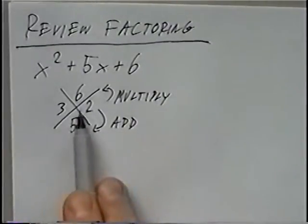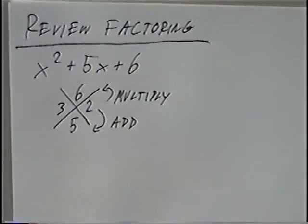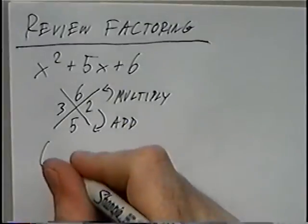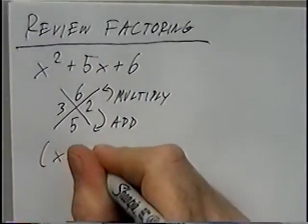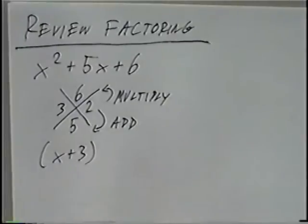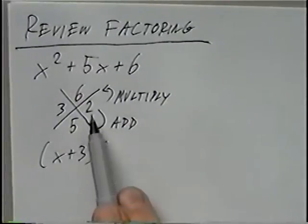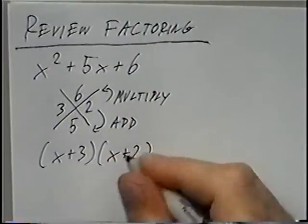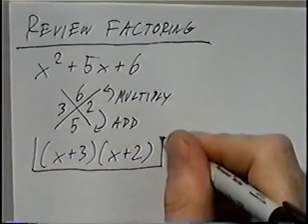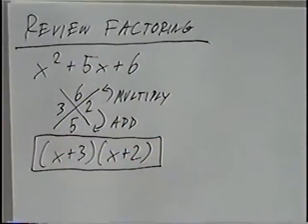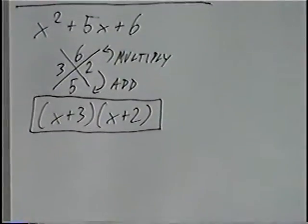Once you know the two numbers that solve the diamond, or X, we can write the answers. Since we're factoring x and we have the number 3, our first factor would be x plus 3. And our second factor using the number 2 would be x plus 2. So the two factors for this question are x plus 3 and x plus 2.